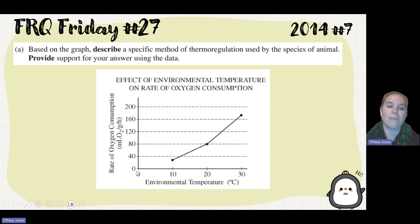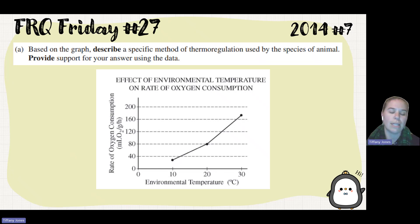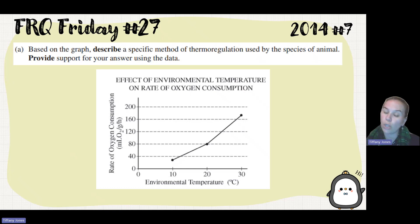My data gives me environmental temperature on one axis and the rate of oxygen consumption on the other axis. Rate of oxygen consumption is talking about metabolic rates or metabolism. Oxygen is the final electron acceptor. And so if I see a high rate of oxygen consumption, that means there's a high amount of metabolism. If there's a low rate of oxygen consumption, that means there's a low metabolism.